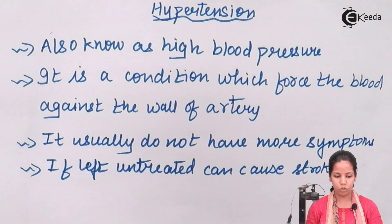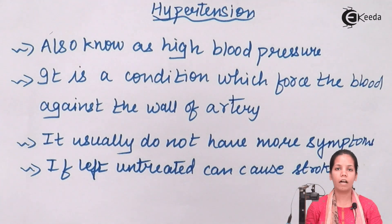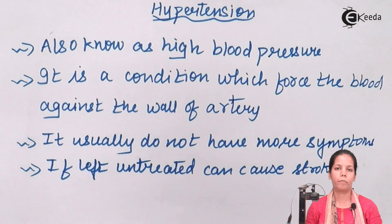Such people should try to avoid caffeine or anything that puts a strain on their system, especially the central nervous system. Tobacco, smoking, and nicotine should all be cut off from people who suffer from high blood pressure.